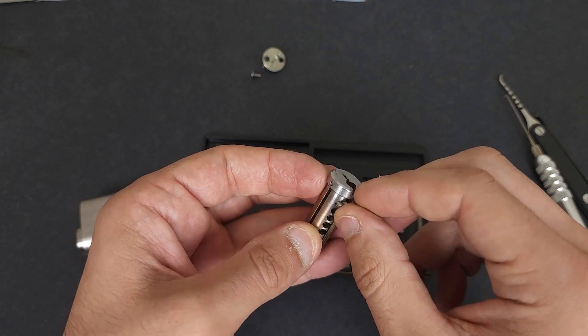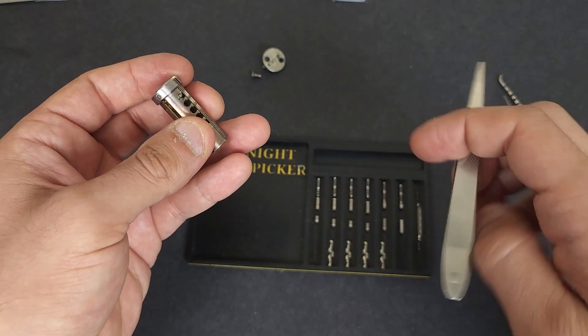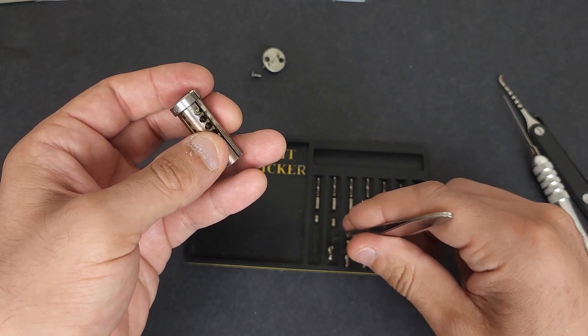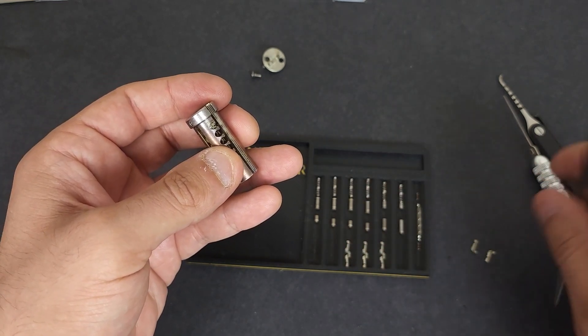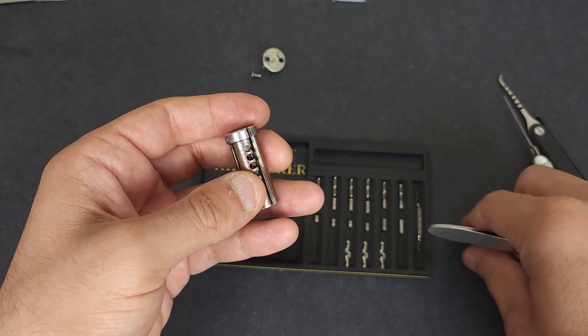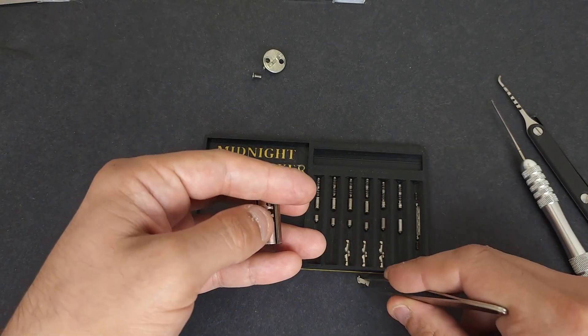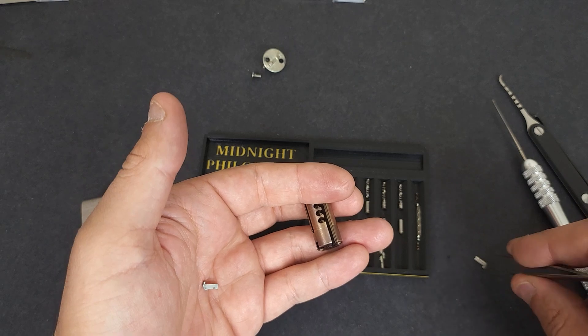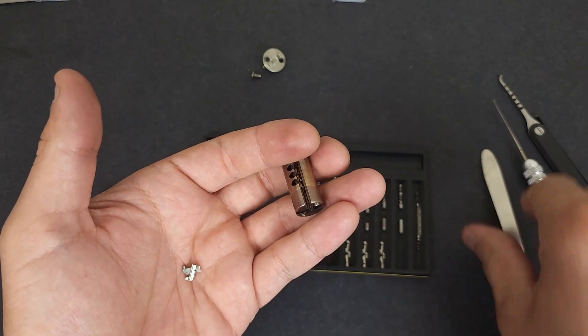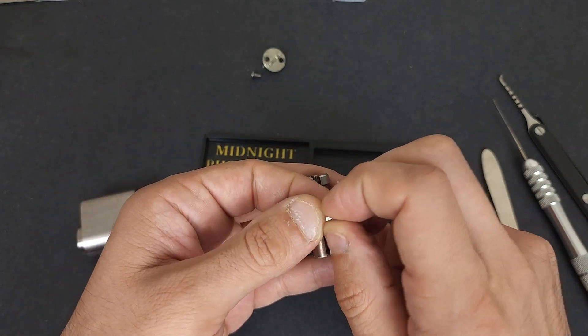When I was still living where I was living before, I was working on this lock before I stopped making videos, before I took my big break. This was the lock that I was last working on, and I got to the point where I had learned the whole sidebar. I had managed to progressive pin the whole sidebar to the point where I had it fully picked, and I felt pretty confident that I was about to get it.